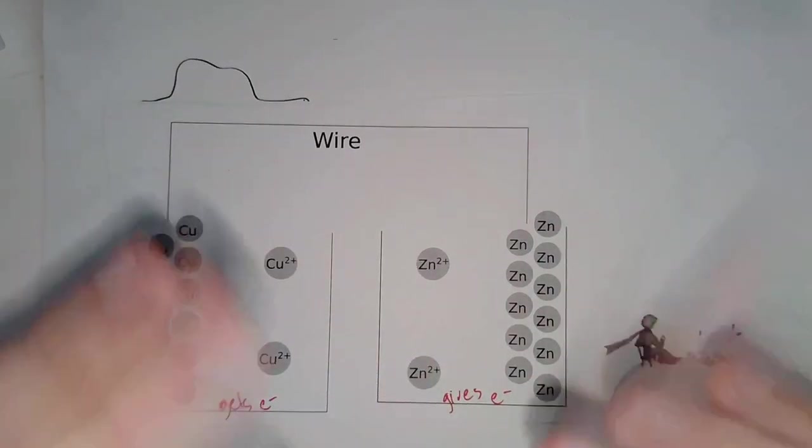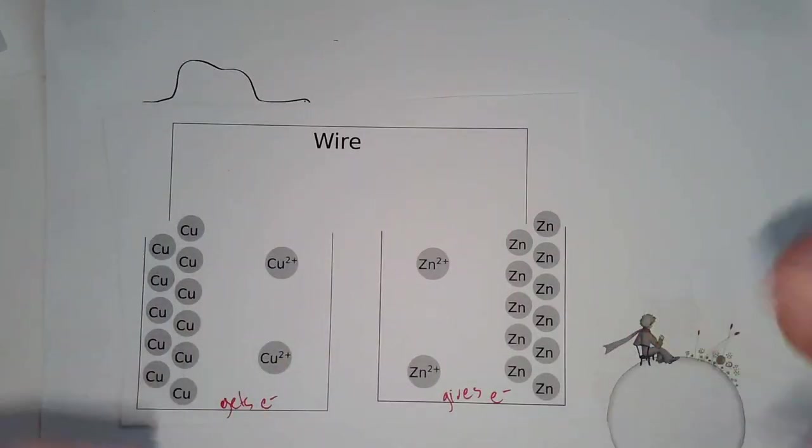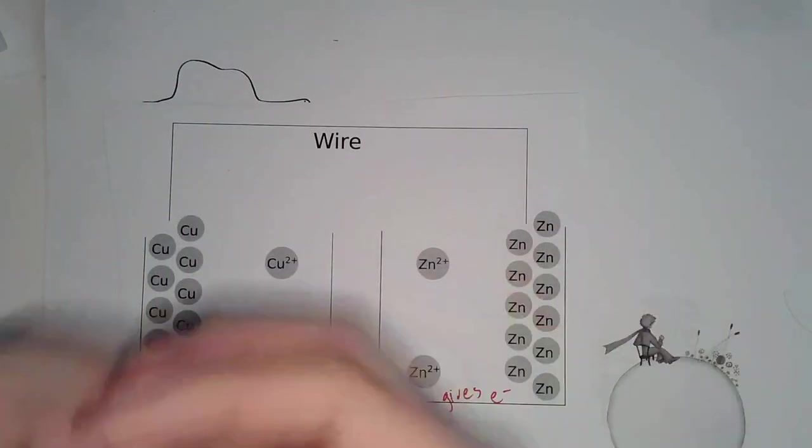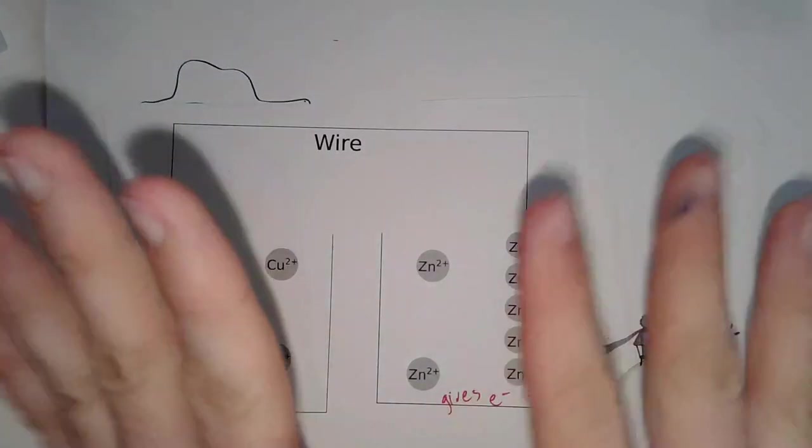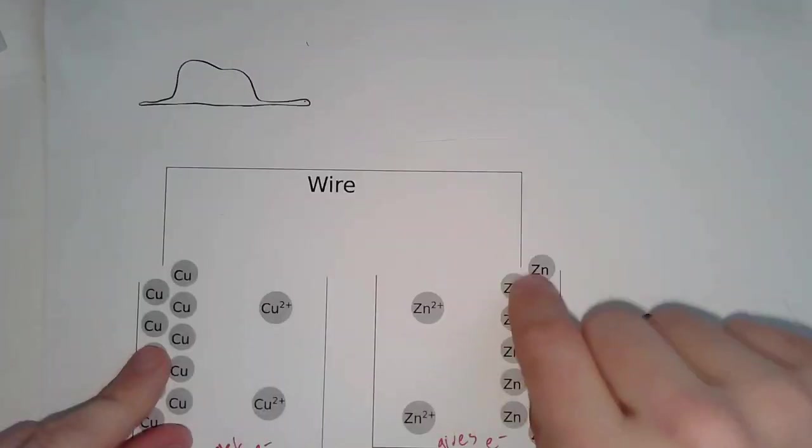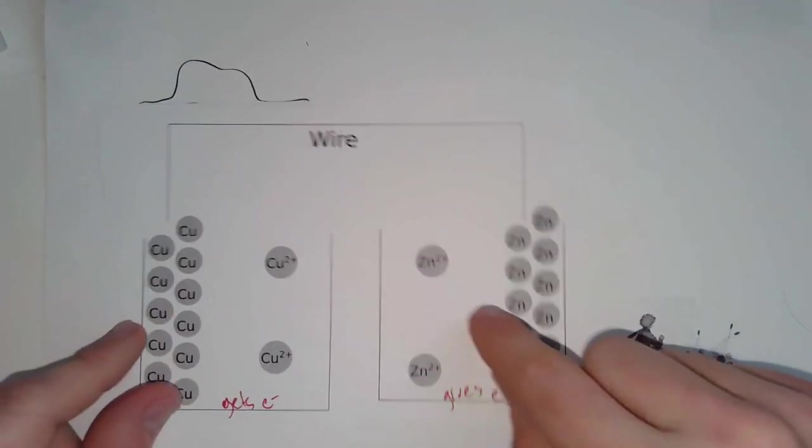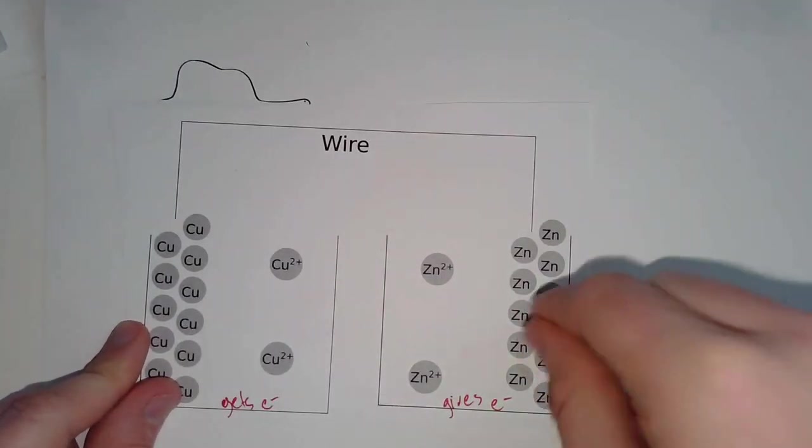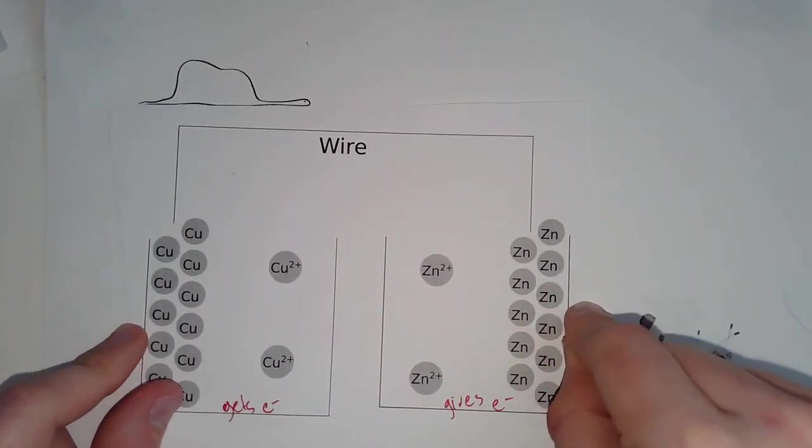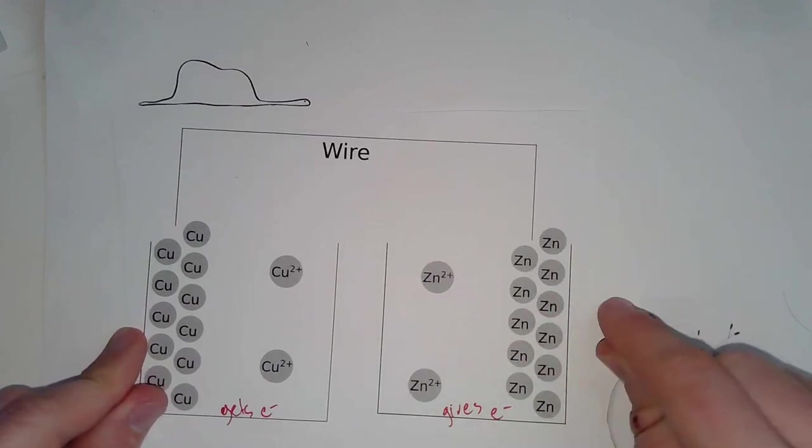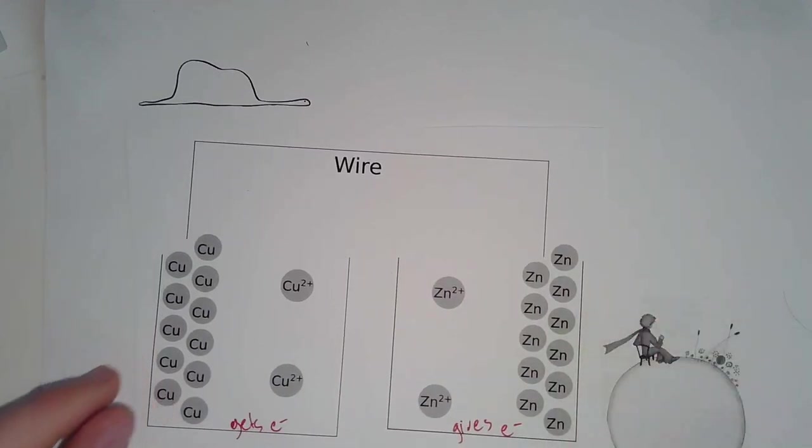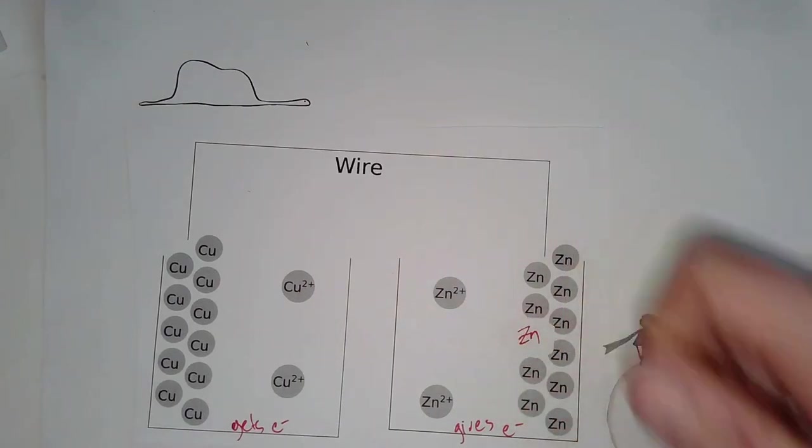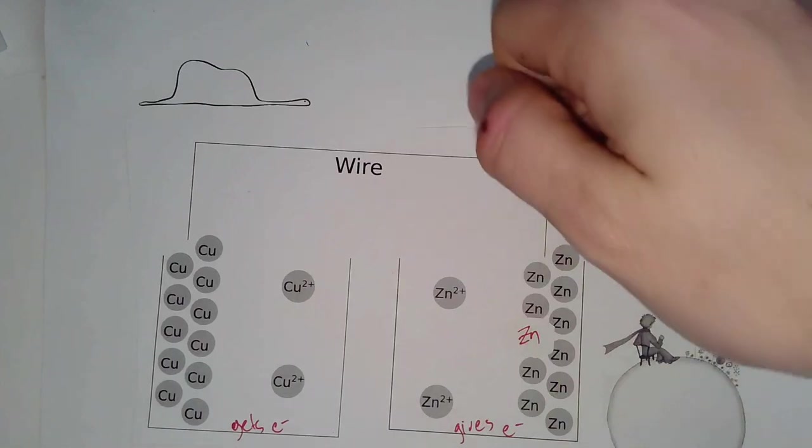So copper is always going to win this battle for the electrons because it has a stronger pull for electrons. And there's just a chart that we can look at to do that. And I'm not going to make you do that. But what that means is when I connect these things with a wire, that means that copper is going to pull electrons away from the zinc and take them, because it's better at taking electrons.